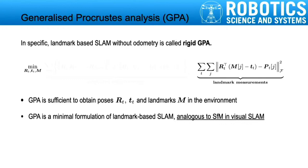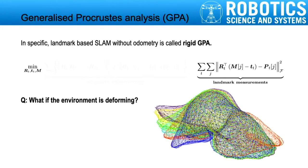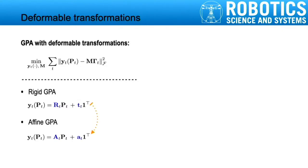In particular, landmark-based SLAM without odometry is called Rigid GPA. From Rigid GPA, we can solve both poses and landmarks. Having said that Rigid GPA is sufficient to determine poses and landmarks, what if the environment is deforming, where each point cloud has different shapes due to the existence of deformations? To accommodate deformations, we must use more general transformation models in GPA, for example, the affine transformation.